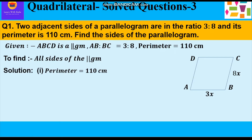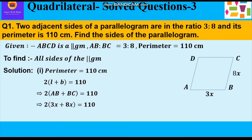Now let's start with the solution. Perimeter is 110 cm and we know that in a parallelogram both pairs of opposite sides are equal to each other. So we can write 2(length + breadth) = 110. Let length be AB and breadth be BC. So we write 2(AB + BC) = 110. Now AB is assumed to be 3x and BC is 8x, so we write 2(3x + 8x) = 110.